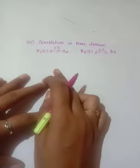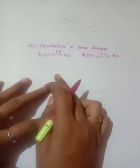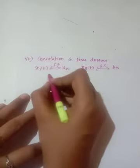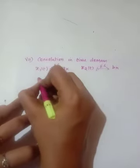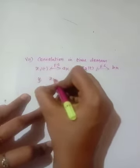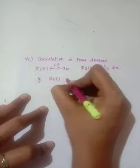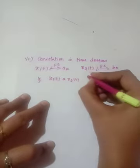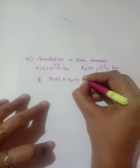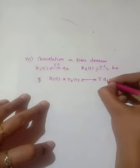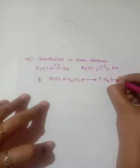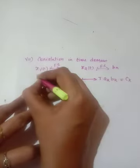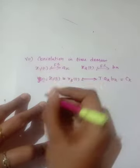The next property is convolution in time domain. We have already seen multiplication in time domain; now we are going to see convolution in time domain. We consider two signals and perform convolution: x1(t) convolution x2(t). The result to prove is ck = T · ak · bk. Assign this as y(t) and ck.